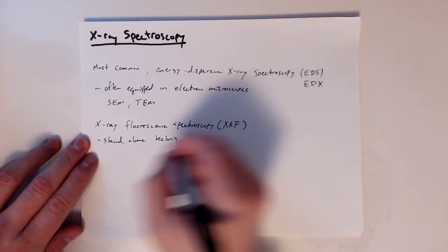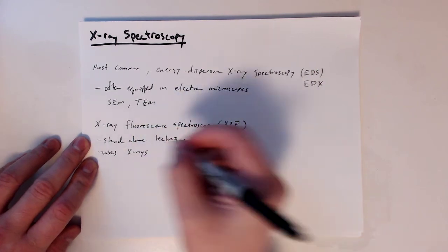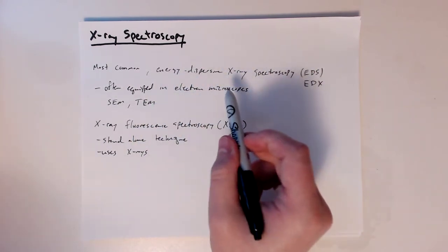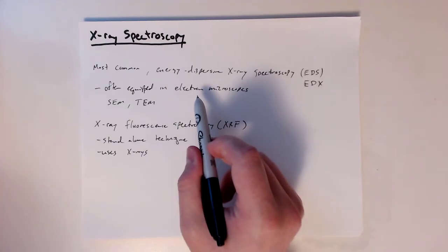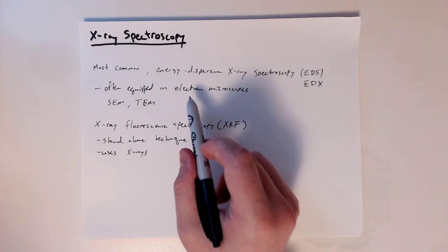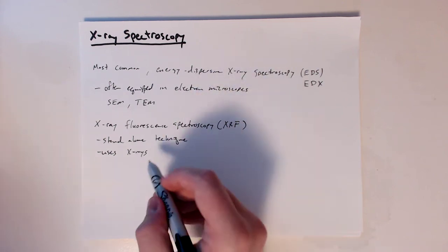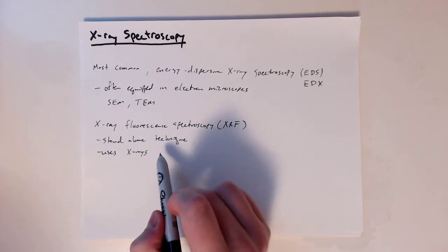And it uses x-rays. So in this technique, energy dispersive, since it's equipped in EM microscopes, the reason it's very common is because it uses electrons as the source of energy. Here with x-ray fluorescence spectroscopy, we use x-rays.